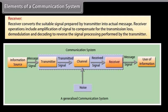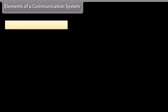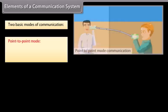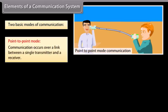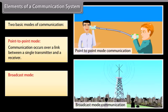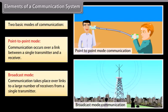Two basic modes of communication: Point-to-point mode, where communication occurs over a link between a single transmitter and a receiver. Broadcast mode, where communication takes place over links to a large number of receivers from a single transmitter.